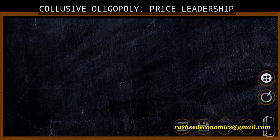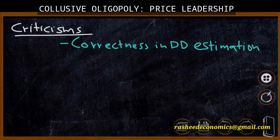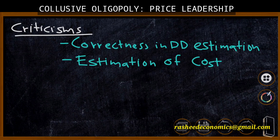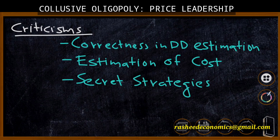Now we move to the major criticisms of price leadership. First, the success of price leadership depends on the correctness of demand estimation — if demand estimation is accurate, price leadership will be successful; otherwise there will be a collapse. Second, the estimation of cost is also very difficult; identifying cost conditions of all firms is challenging for the leading firm. Third, in some situations existing firms may follow secret strategies, such as secretly reducing price or entering into non-price competition, which can lead to the collapse of price leadership.